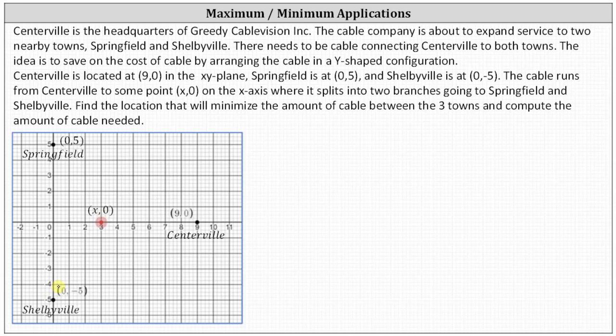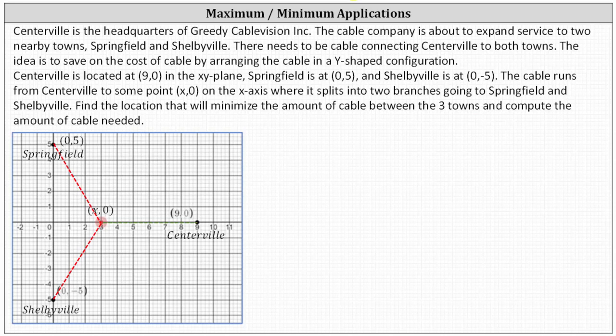Find the location that will minimize the amount of cable between the three towns and compute the amount of cable needed. The configuration looks something like this: the cable starts at Centerville, travels along the X-axis to the point (X, 0), and then splits — one branch goes to Springfield, the other branch goes to Shelbyville.